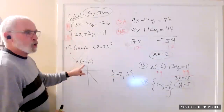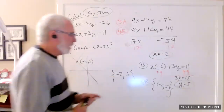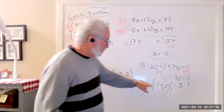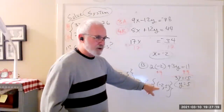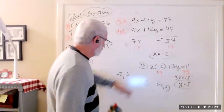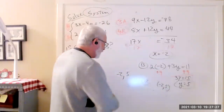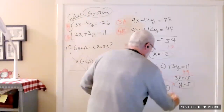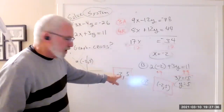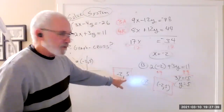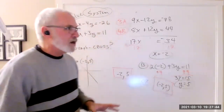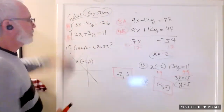I wanted to make a point of the proper notation. You will lose points if you don't use parentheses when you should. There's a major difference between just listing negative 2, 5 and listing the ordered pair (negative 2, 5). Those are completely different animals.